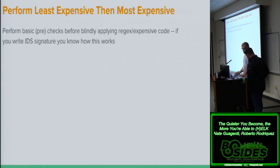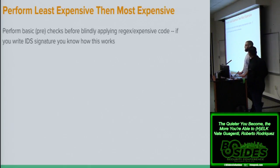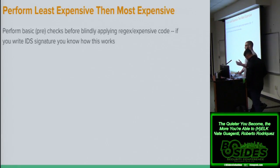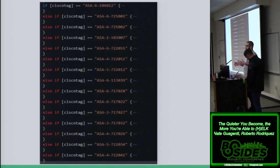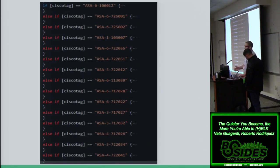Perform the least expensive operations first. If you've written IDS signatures for Suricata or Snort, before you perform some crazy regex, you want to say: is this HTTP and is the request method GET? Then perform the expensive operation. It works the same way in Logstash. Cisco ASA has 20-30,000 log messages, so don't blindly fire regexes at all of them. Do a basic pre-parsing first, then do a simple compare before jumping into firing a hundred different regexes at Cisco ASA logs.